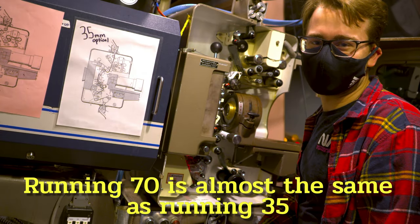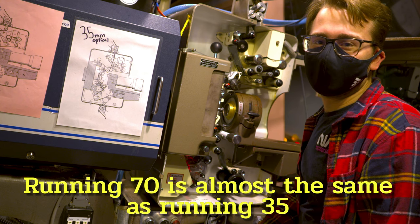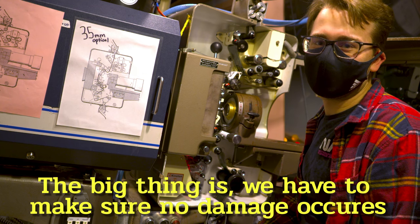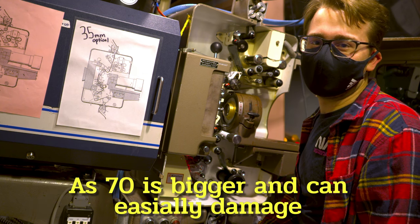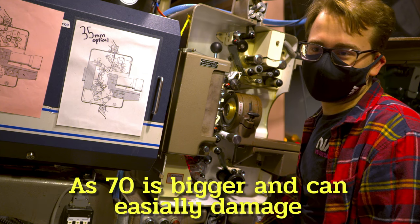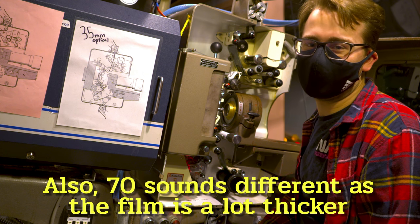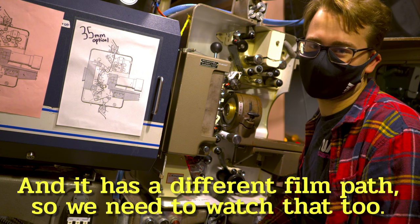Running 70 is almost the same as running 35. The big thing is we have to make sure that no damage occurs while running it, as 70 is bigger and can easily damage. Also, 70 sounds different as the film is a lot thicker and it has a different film path, so we need to watch that too.